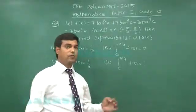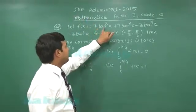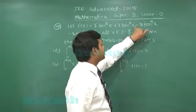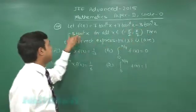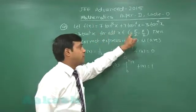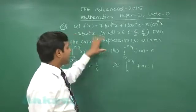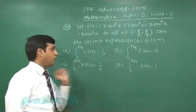Let us go for 49th question. Let f(x) equals 7 tan^8(x) plus 7 tan^6(x) minus 3 tan^4(x) minus 3 tan^2(x) for all x from open interval minus π/2 to π/2. Then the correct expression or expressions from the given options we have to obtain.